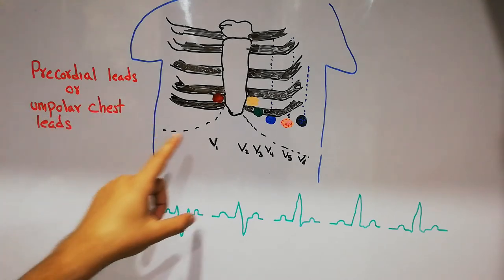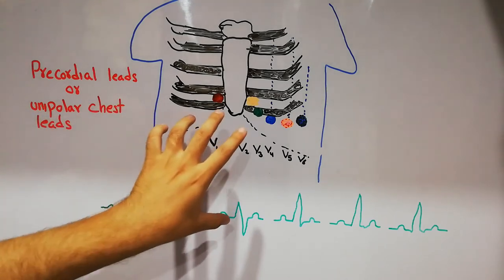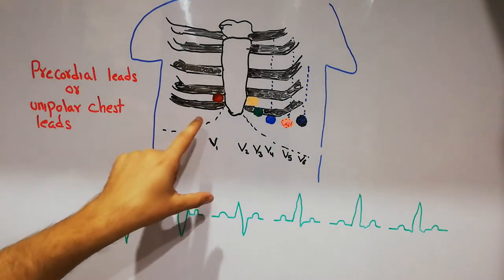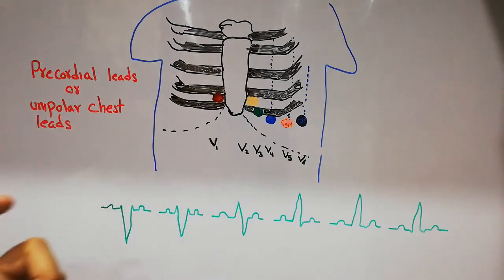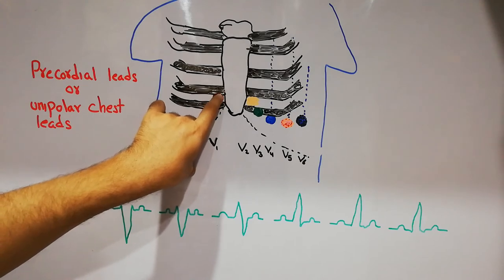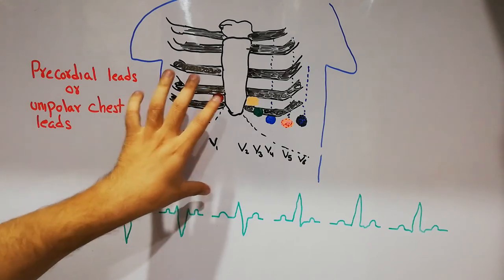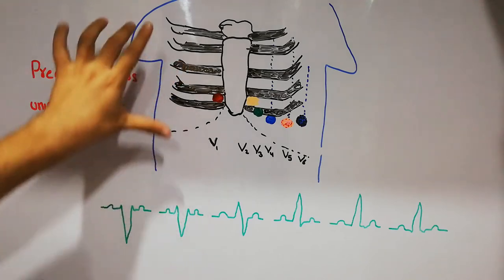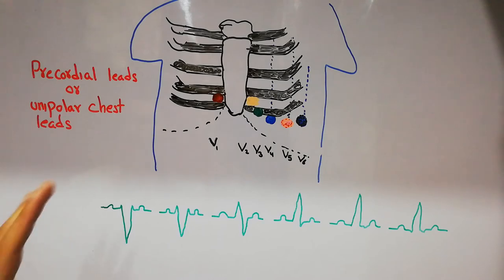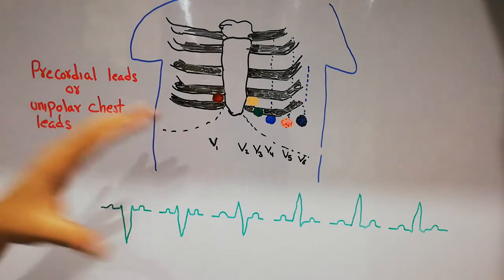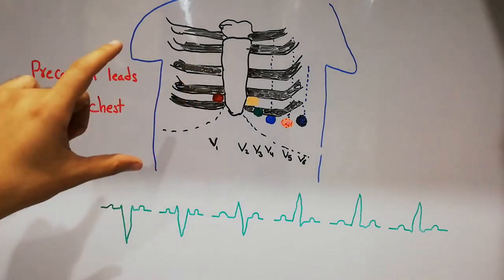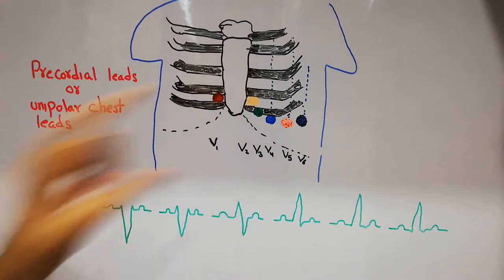The chest leads are 6 in number and they are placed in specific positions. They are unipolar because only one electrode is the active electrode, and that active electrode is placed on a specific area on the chest and is connected with 3 limb leads, which together behave as a neutral or indifferent lead, providing the reference so that the recording is made only from that specific lead.